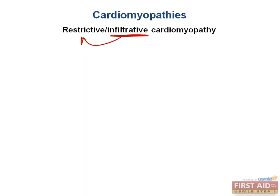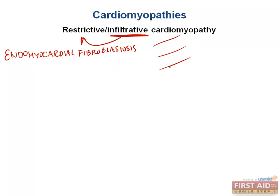A big one is endomyocardial fibroelastosis. There are three layers of the myocardium, and the problem here is fibrosis and excessive deposition of elastic tissue — fibrosis and elastosis — deposited within the endocardium and subendocardium. Anything ending in '-osis' means there is a lot of it: a lot of fiber material and a lot of elastin. This condition appears in the first two years of life.